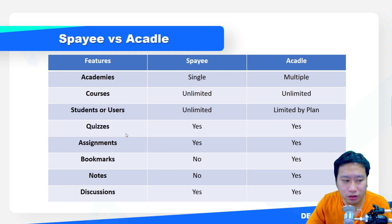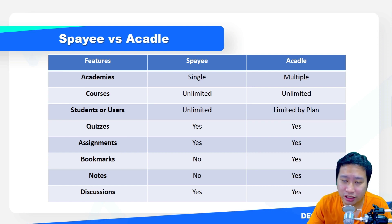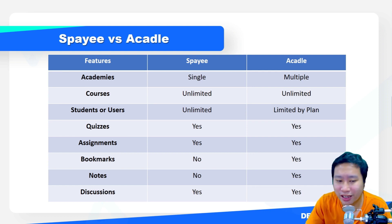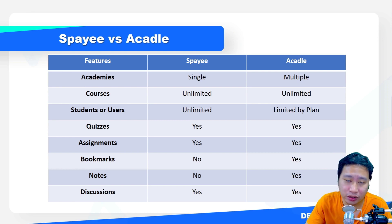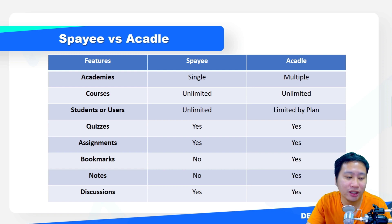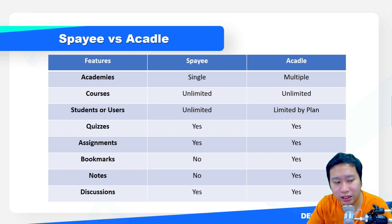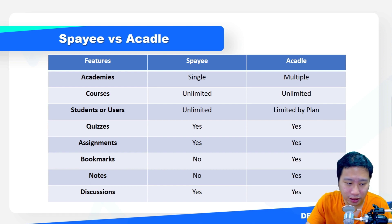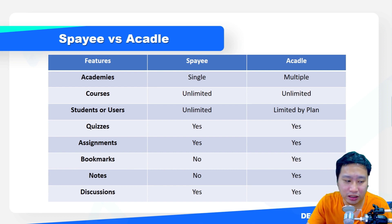With Acadle, courses depend on the plan you have. With Spayee, students and users are unlimited, and storage is also unlimited, while Acadle is limited by the plan that you have. Quizzes are available on both, assignments are available on both, but bookmarks and notes are not available on Spayee.